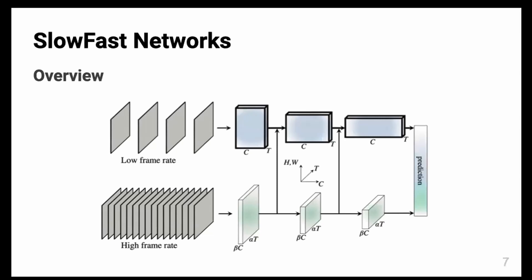The important differences between the two pathways—the upper path is the slow pathway and the below path is the fast pathway—and the major differences are the frame rate and two variables named C and T. I'm going to talk about it.